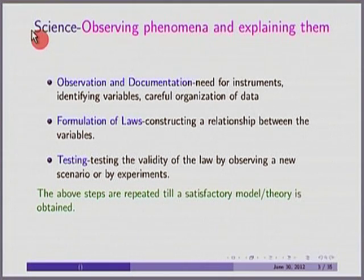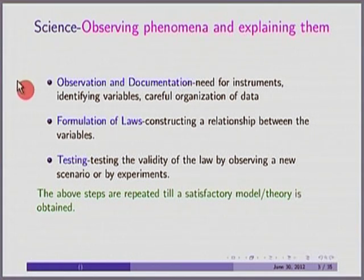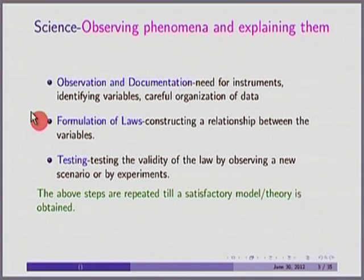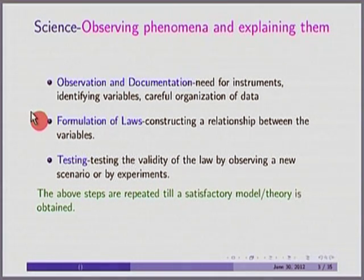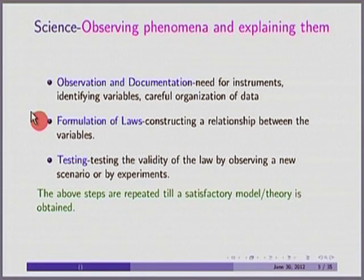Science is about observing phenomena in the physical or social sciences and explaining them. The first part of science is observation and documentation — noting things down, using measurements. The second part is formulating a law that tries to explain how a particular phenomenon happens — constructing a relationship between the variables we are observing. Finally, when we make that law, we have to test whether it is correct. If it fails, we modify our law. These steps are repeated until the law satisfactorily explains what we set out to explain.